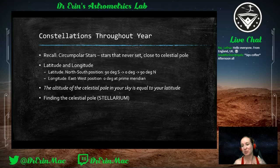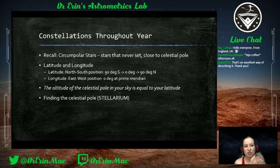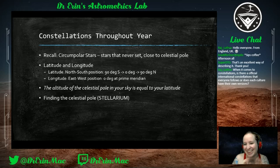Longitude, on the other hand, is much more difficult to figure out. If we get an opportunity to explore ancient astronomy, we can talk about how early navigators did figure out longitude, but it's very difficult to use the stars for that because the earth is rotating and it changes throughout the year. Latitude, though, is very easy to figure out.